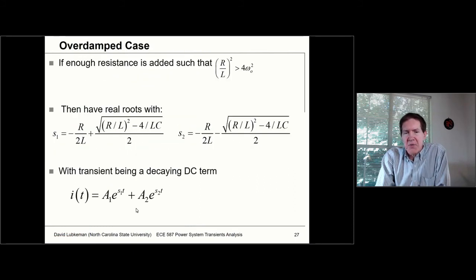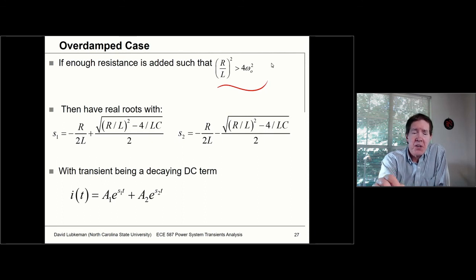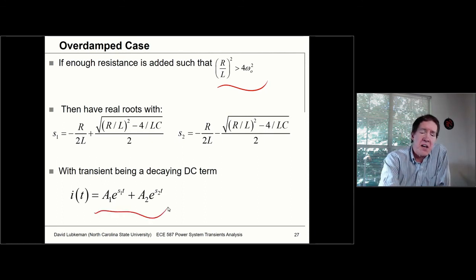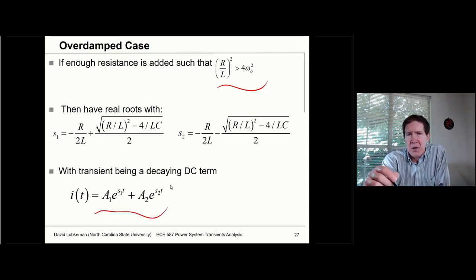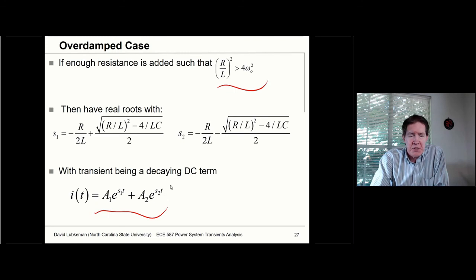There's also an overdamped case — I'm not really going to go through this because we don't see it unless we add a lot of resistance. But you could set this up so there's no ringing transient at all — just a decaying DC exponential offset.